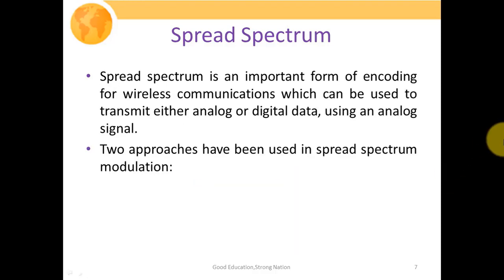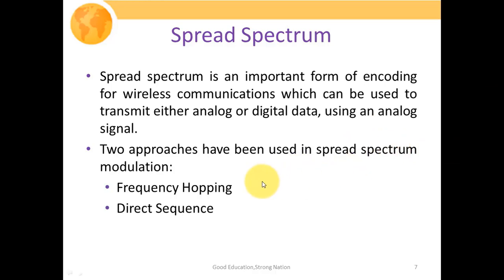Spread spectrum is an important form of encoding for wireless communication. It is used to transmit either analog or digital data using an analog signal, since digital signals cannot be passed through the open air, so they must be converted into a form that can be transported through free space. Two approaches have been used in spread spectrum modulation: number one is frequency hopping, and the second one is direct sequence spread spectrum. In frequency hopping, we change the carrier frequency periodically, so the encoded signal contains a much wider bandwidth than the original sequence. In direct sequence spread spectrum, spreading is performed with the help of certain code words or sequences. We will discuss these two processes in much greater detail in upcoming lectures.